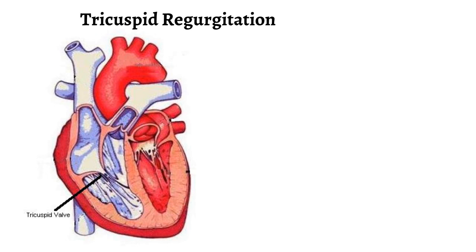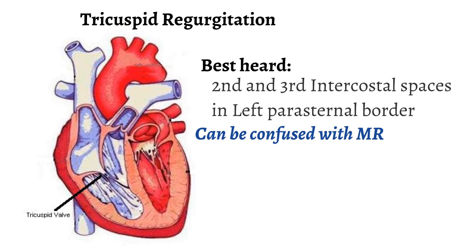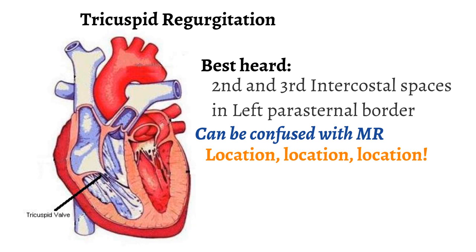The next murmur is tricuspid regurgitation. Tricuspid regurgitation is best heard using the diaphragm of the stethoscope. The best location to listen is at the second and third intercostal spaces of the left sternal border. It sounds like this. Occasionally, the murmur will radiate to the apex of the heart and can be confused with mitral regurgitation. Two features help distinguish tricuspid regurgitation: the location as we discussed, and also how it changes with breathing.